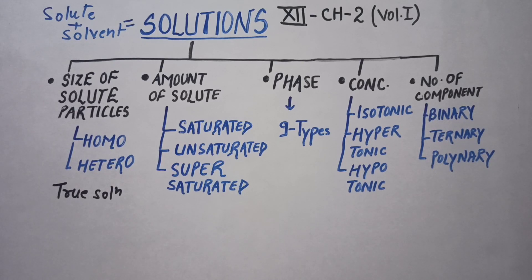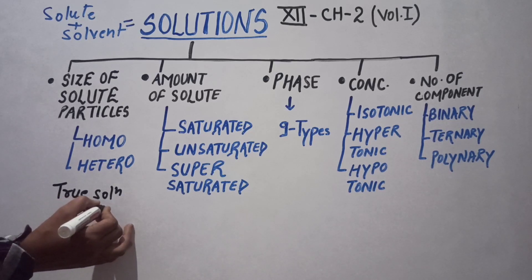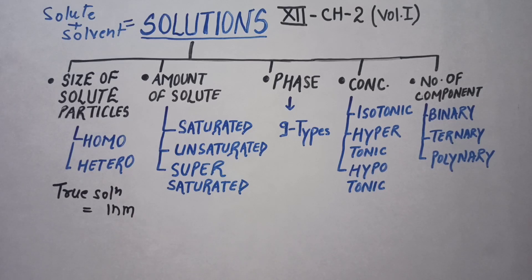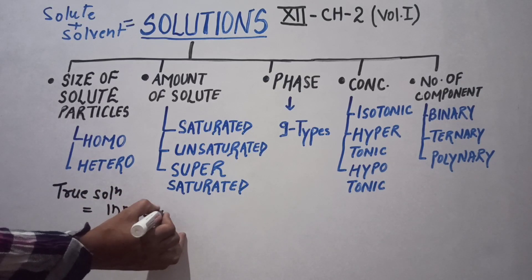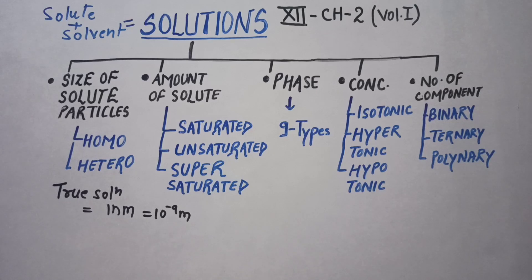In true solutions, the particle size of the solute is lesser than 1 nm, which is nanometer. You can convert nanometer into meter: 1 nm equals 10 to the power minus 9 meter. Particles which are lesser than 10 to the power minus 9 meter, or 1 nm, those solutions are known as true solutions and they are generally homogeneous.